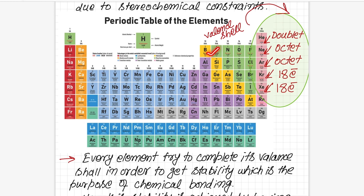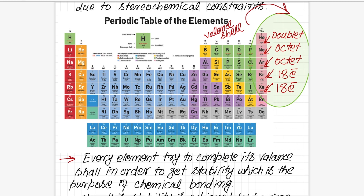I have not considered boron and aluminium here because these are electron-deficient compounds — even if they don't complete the octet in their valence shell, they are still stable. We will not talk about those elements because they make ionic bonds; we are only dealing here with covalent molecules.